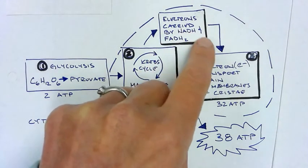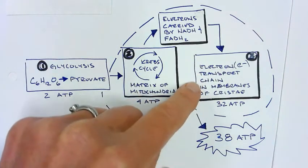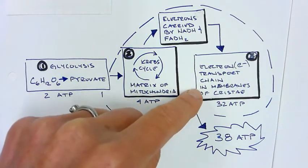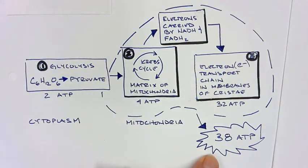FAD and NADH2 are carried over to the electron transport chain, which is in the membranes of the cristae, where we have a net gain of 38 ATP.